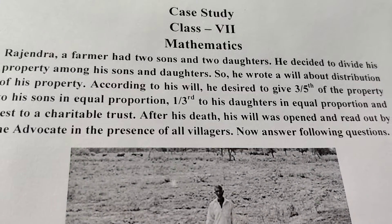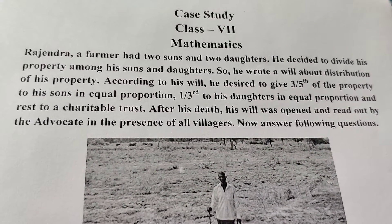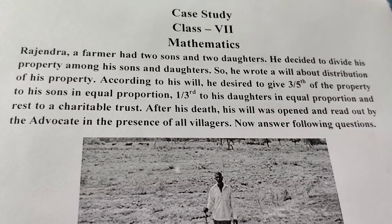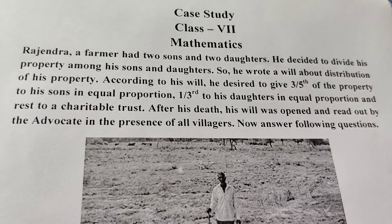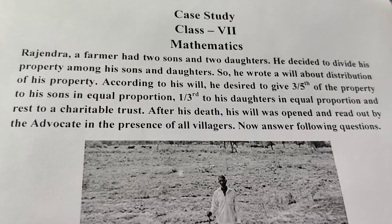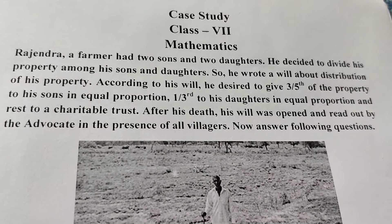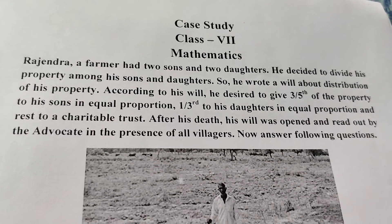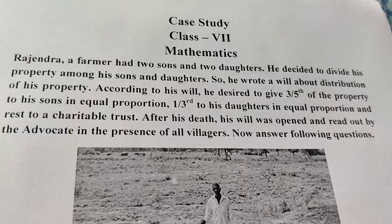According to his will, he desired to give 3/5 of the property to his sons in equal proportion, and 1/3 to his daughters in equal proportion, and rest to a charitable trust. After his death, his will was opened and read out by the advocate in the presence of all villagers.